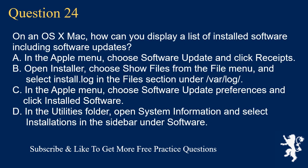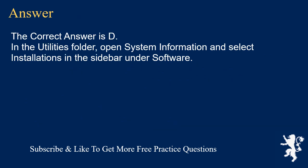Question 24. On an OSX Mac, how can you display a list of installed software including software updates? A. In the Apple menu, choose Software Update and click Receipts. B. Open Installer, choose Show Files from the File menu, and select install.log in the Files section under /var/log/. C. In the Apple menu, choose Software Update Preferences and click Installed Software. D. In the Utilities folder, open System Information and select Installations in the sidebar under Software. The correct answer is D: In the Utilities folder, open System Information and select Installations in the sidebar under Software.